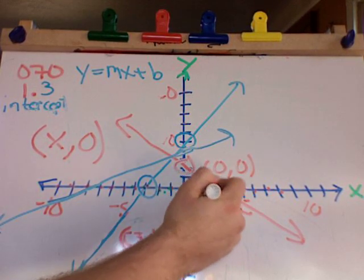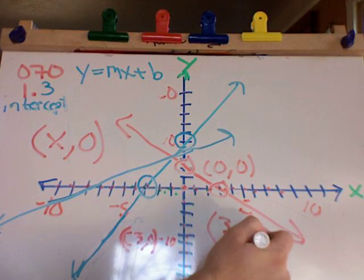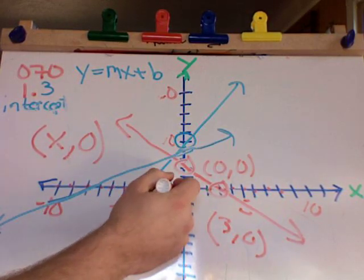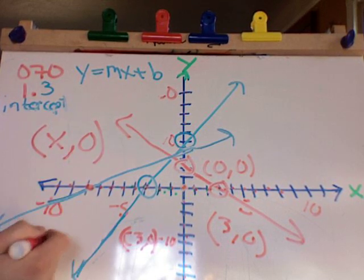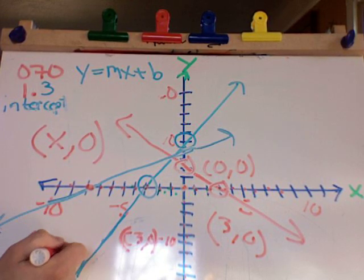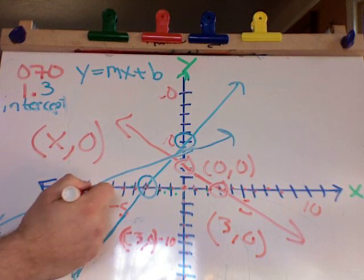This one right here would be (3, 0). This one right here would be one, two, three, four, five, six, seven—about (-8, 0).